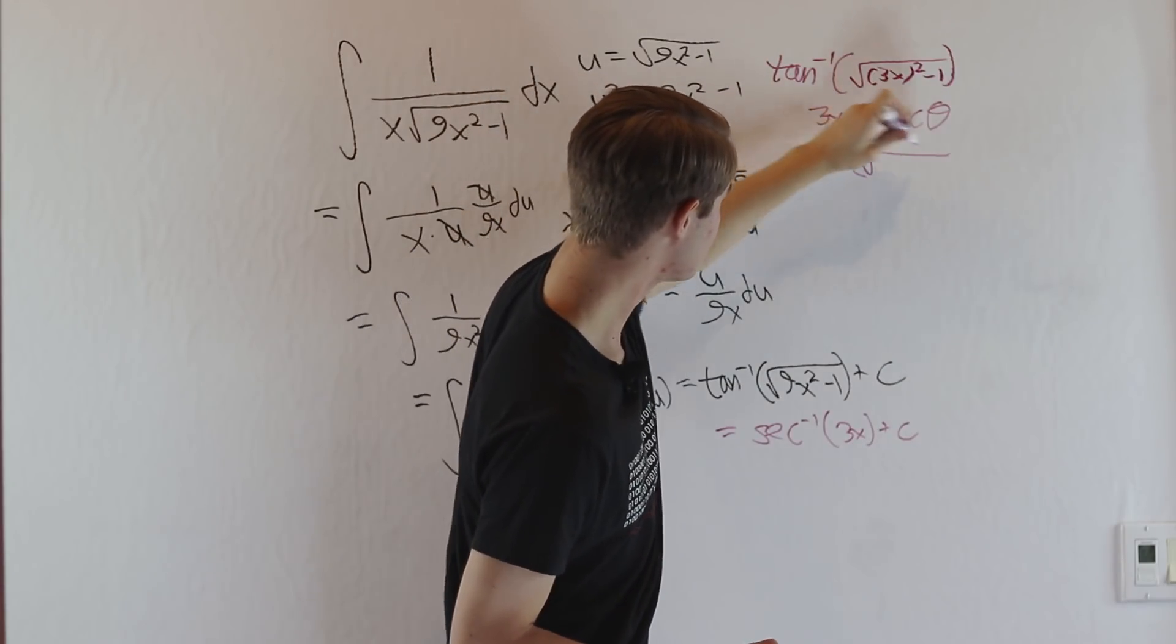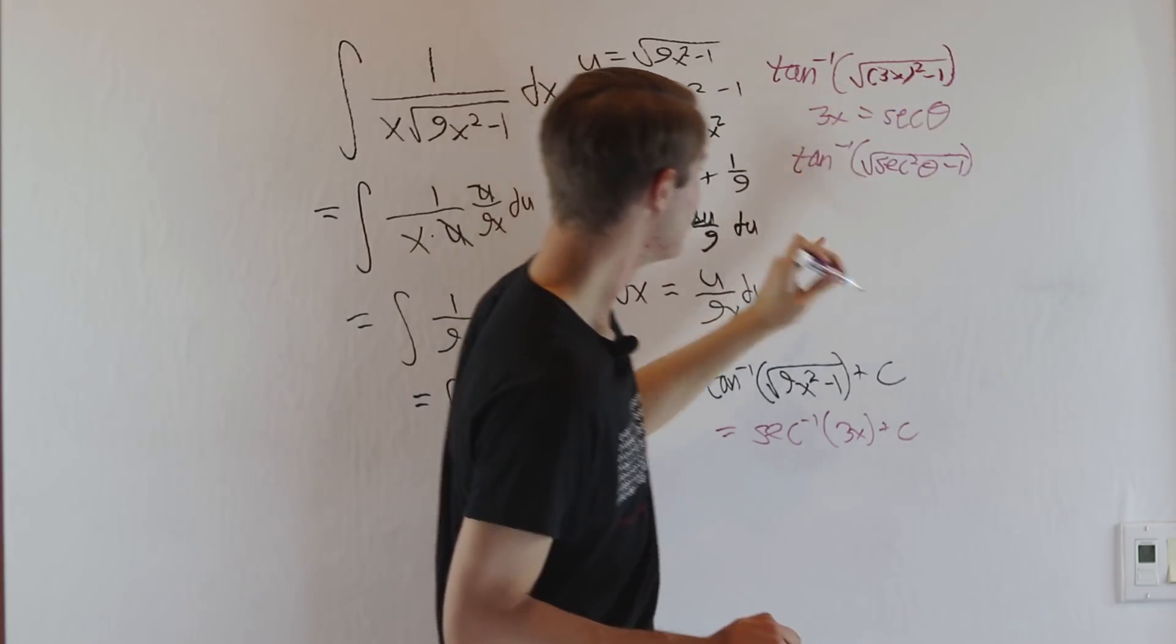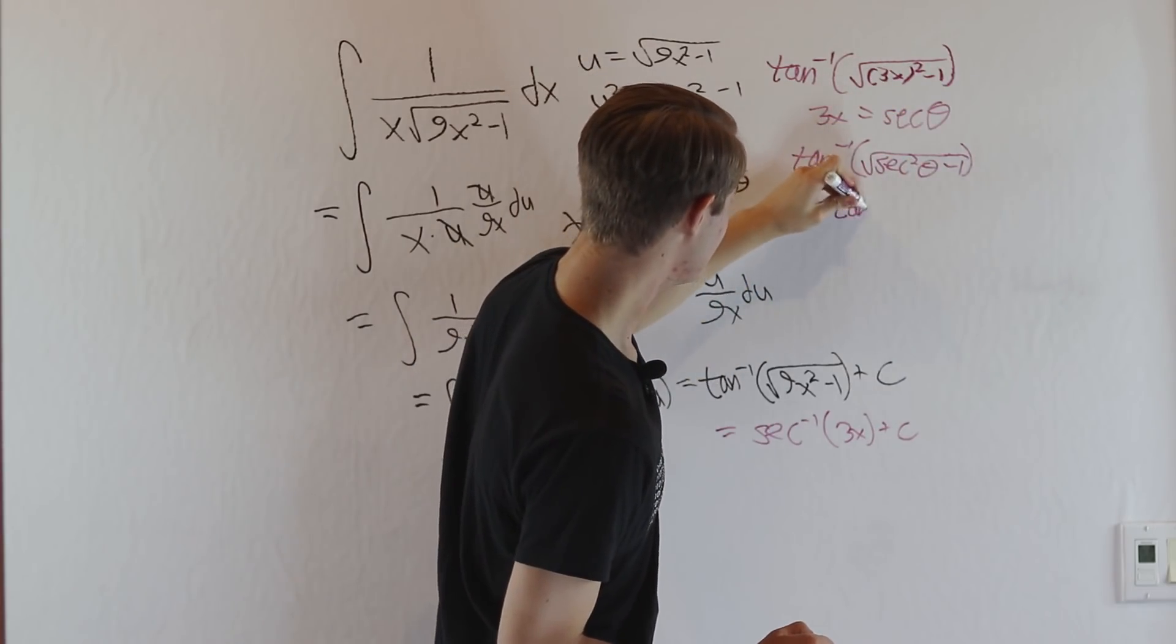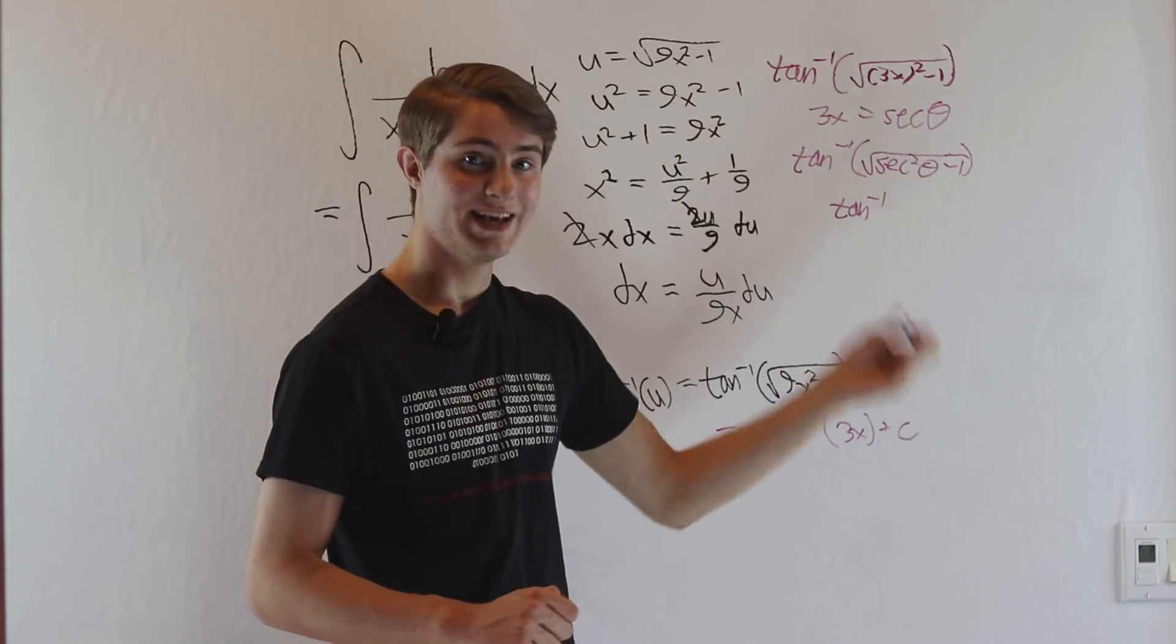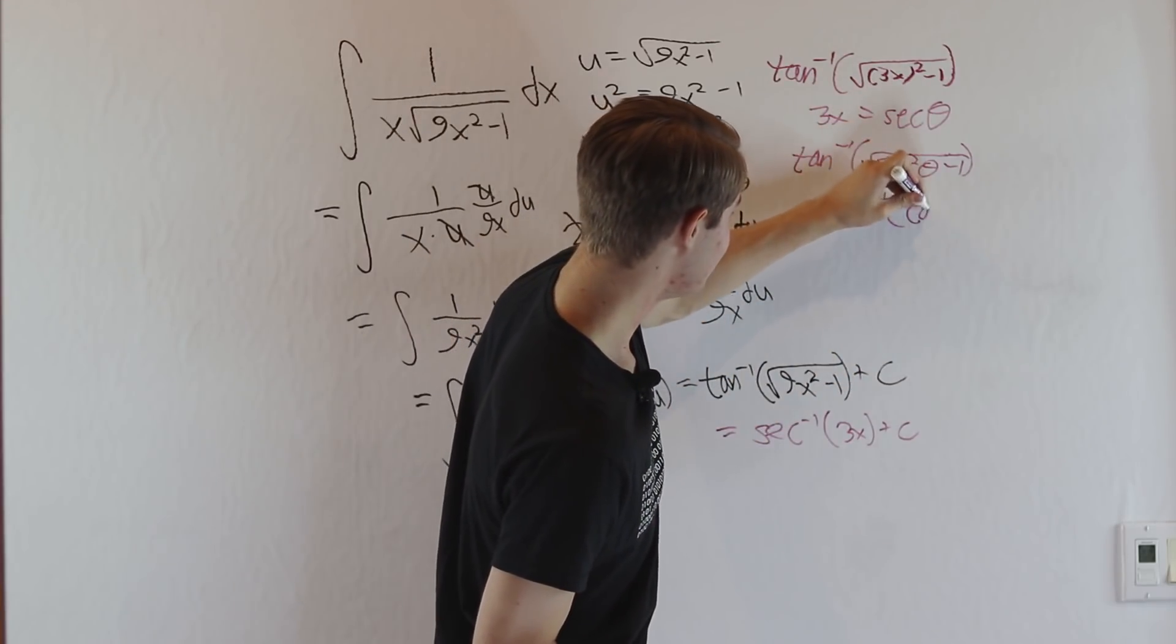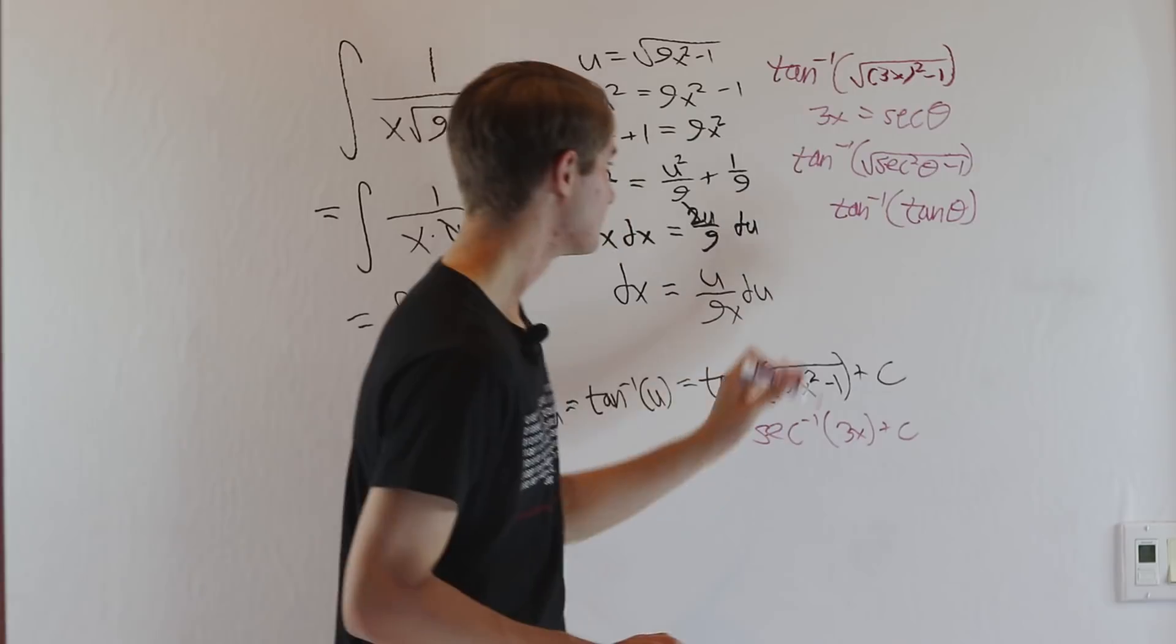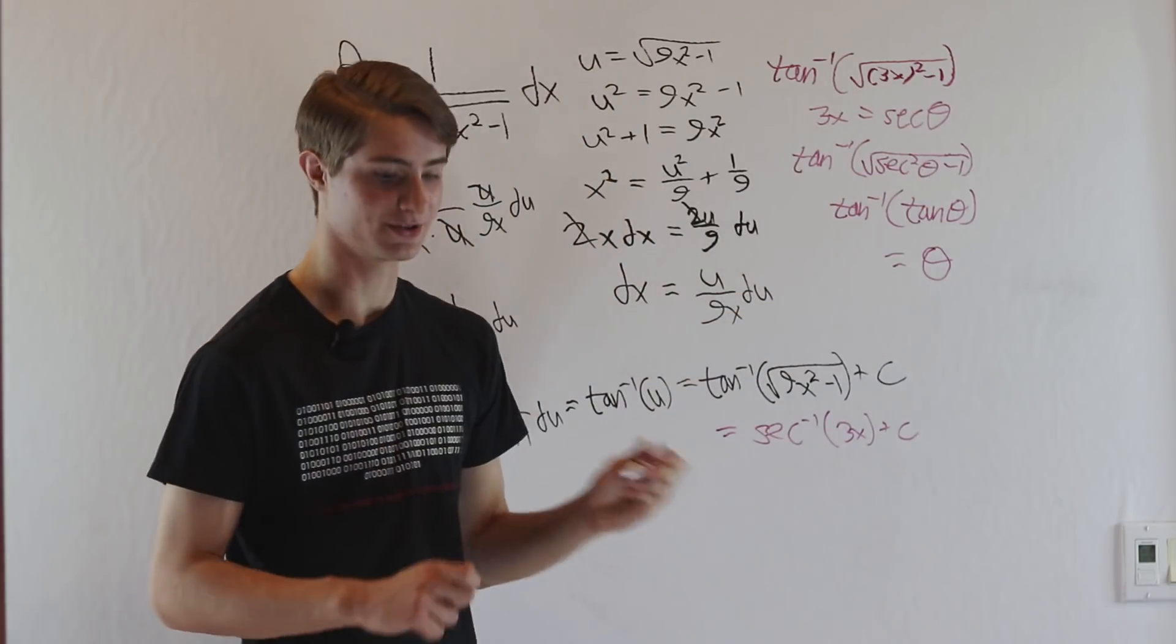We get the inverse tangent of the square root of secant squared theta minus 1. And we know that this inside, we're going to get the square root of secant squared theta minus 1 is tangent squared theta, and the square root of tangent squared theta is just going to become the tangent of theta. So we have the inverse tangent of tangent theta, which is, of course, just equal to theta.